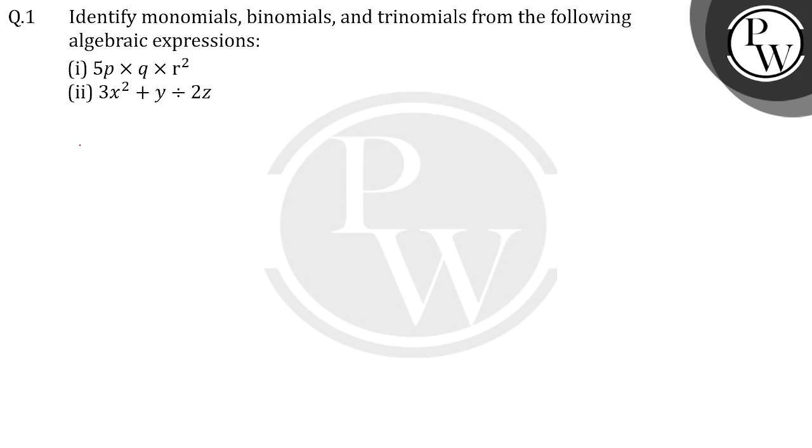If we look at our first part here, we have 5p multiplied by q multiplied by r square. These are 3 multiplied.